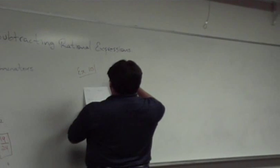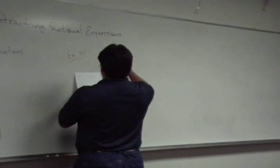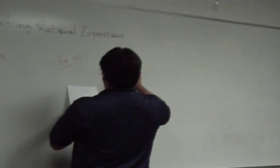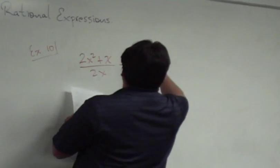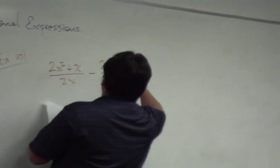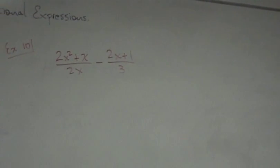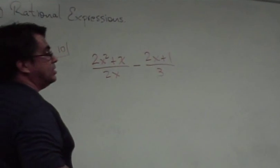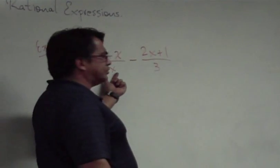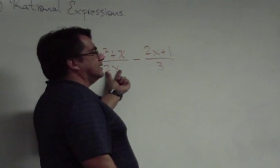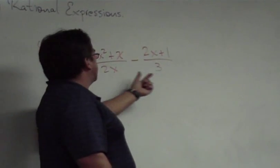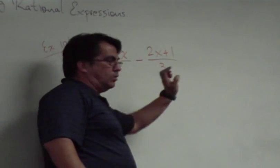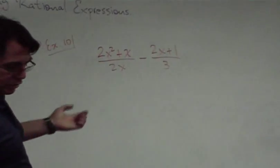Here's the first polynomial problem where the denominators are different: (2x² + x) / 2x minus (2x + 1) / 3. Are the denominators the same or different? Different. So we need to factor the denominators. Can I factor 2x? No. Can I factor 3? No. That's it — those are my two factors.